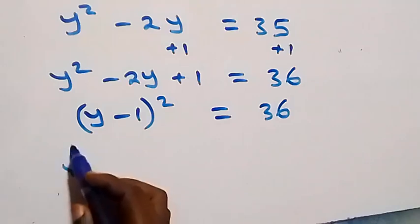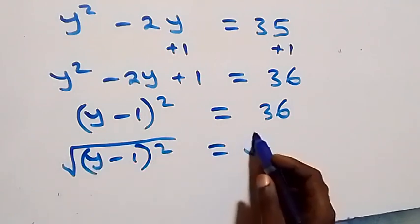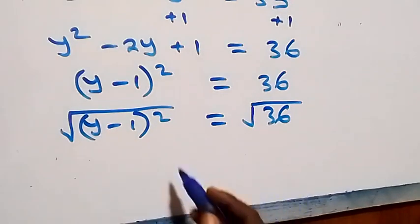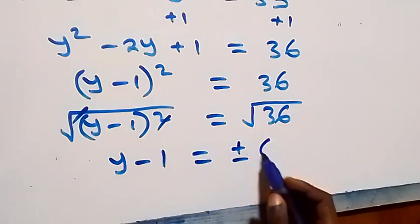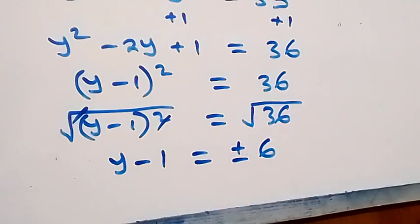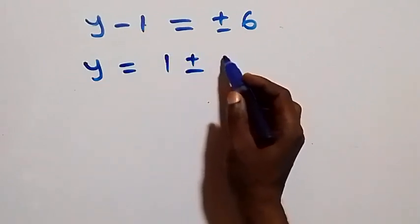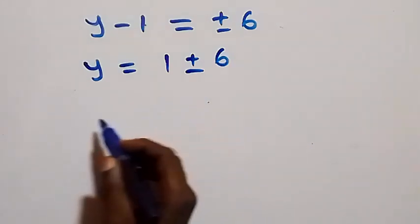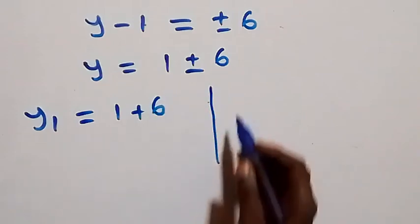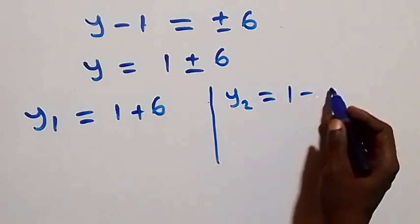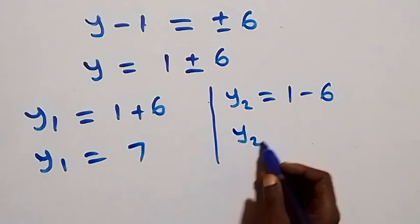Taking the square root on both sides gives y minus one equals plus or minus six. Taking negative one to the other side, y equals one plus or minus six. This gives two values: y₁ equals one plus six, which is seven, and y₂ equals one minus six, which is negative five.